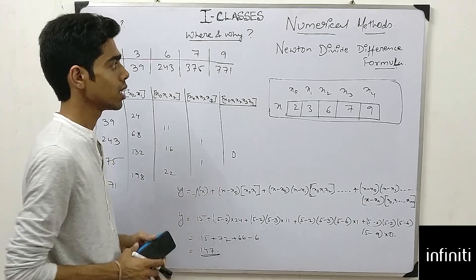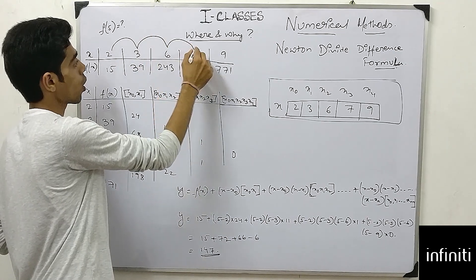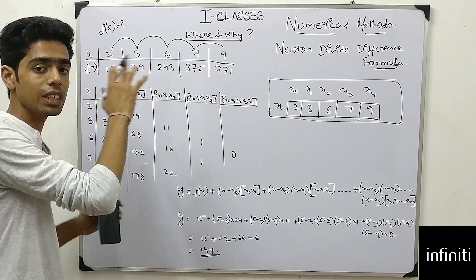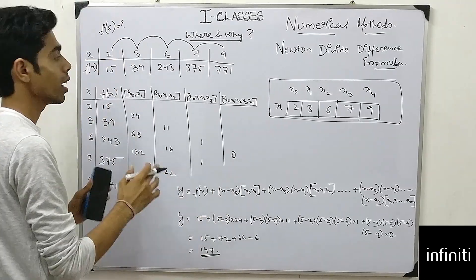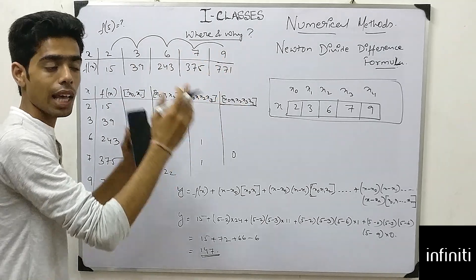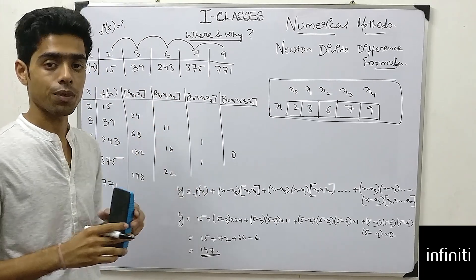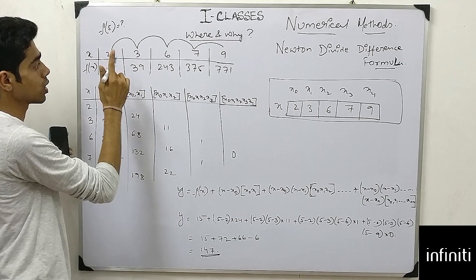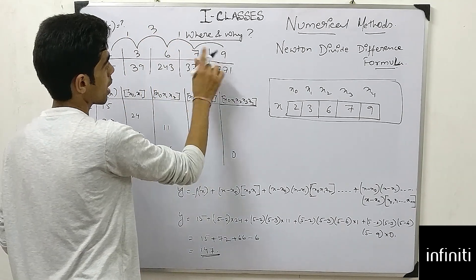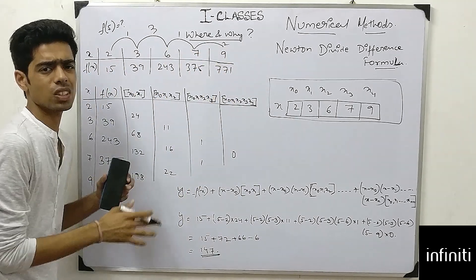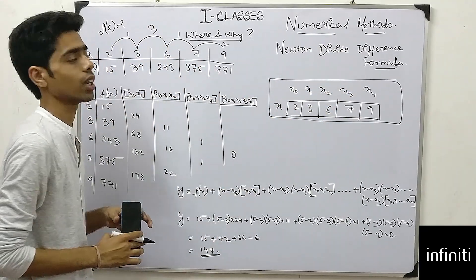You will use this formula because there is not an even difference between the x-values. In Newton's forward and backward interpolation, there was an even difference — like 5 minus 0, 10 minus 5, 15 minus 10, a constant difference of 5. But here, if you check: 3 minus 2 is 1, 6 minus 3 is 3, 7 minus 6 is 1, 9 minus 7 is 2 — the differences are uneven. So here we use Newton's Divided Difference Formula.